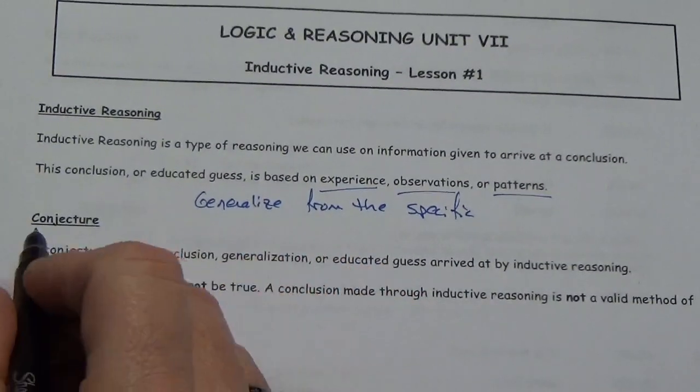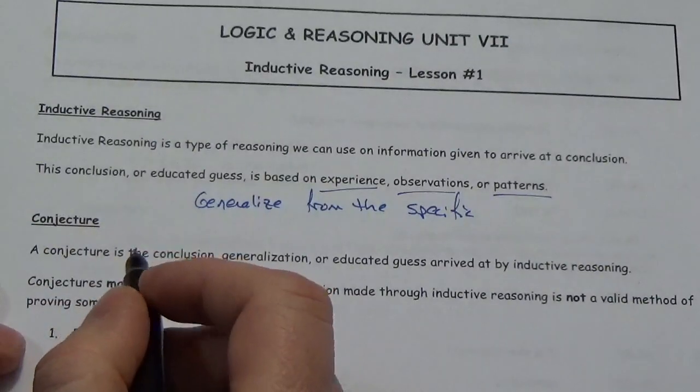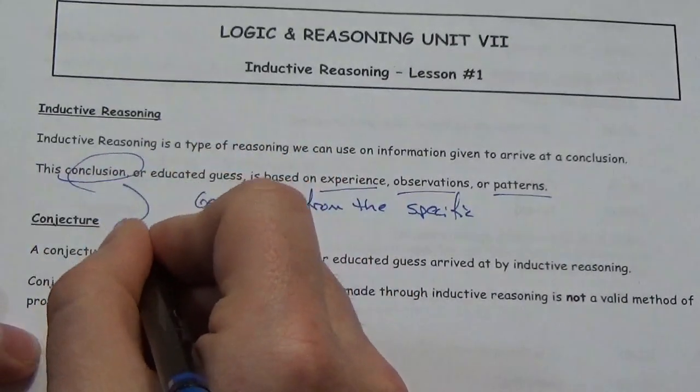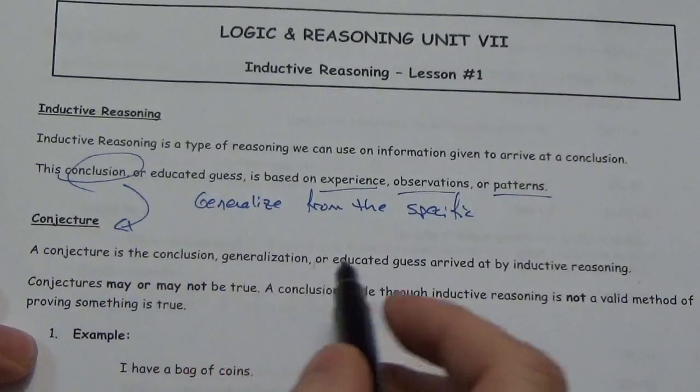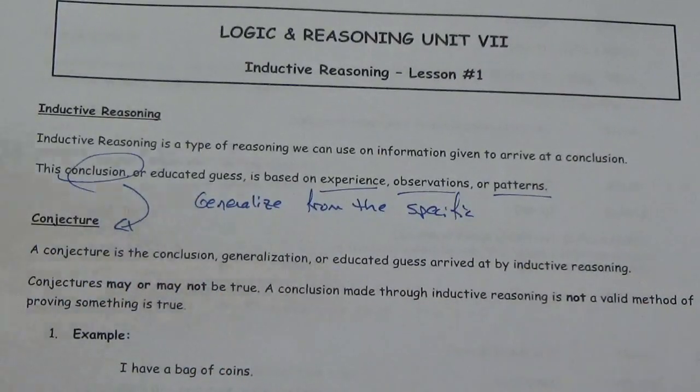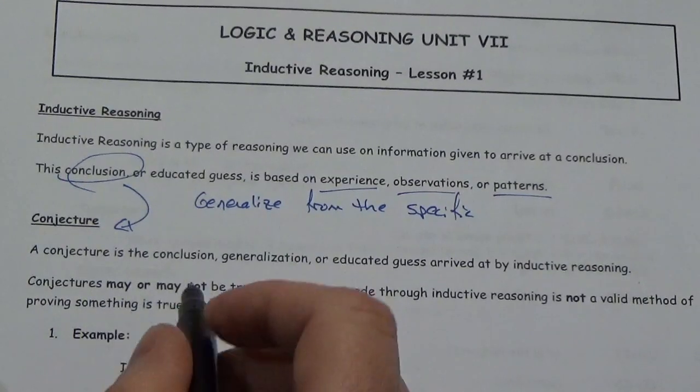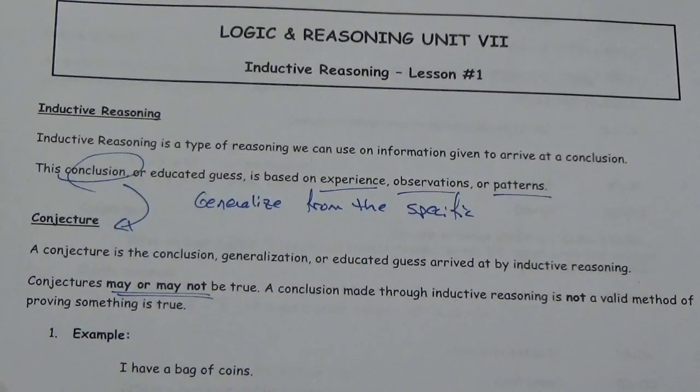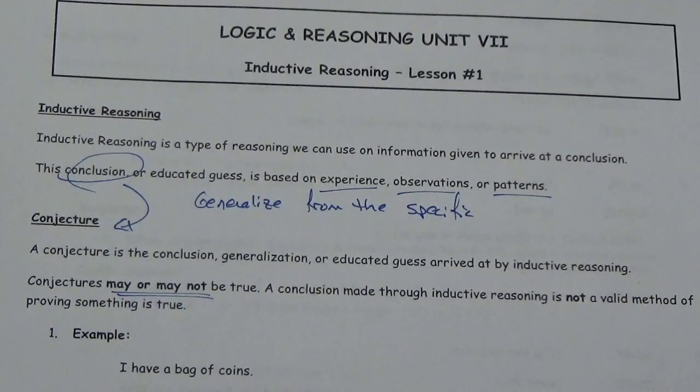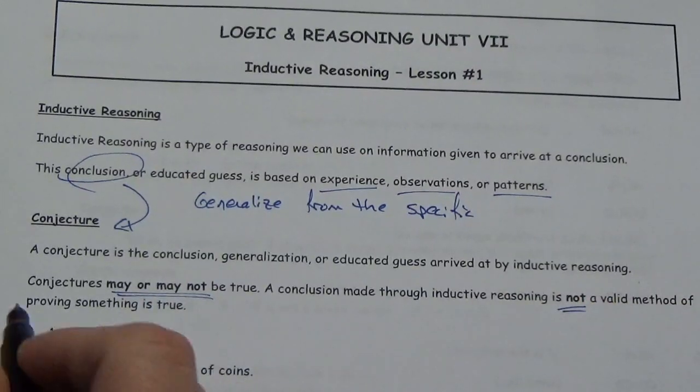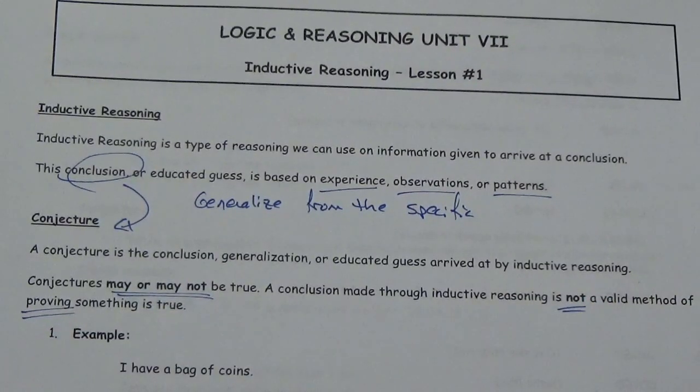So, the conclusion based on inductive reasoning is called a conjecture. A conjecture is the conclusion, generalization or educated guess, arrived at by inductive reasoning. A conjecture may or may not be true. And that's kind of the problem with that. It might be true. It might not be true. A conclusion made through inductive reasoning is not a valid method of proving that something is true.